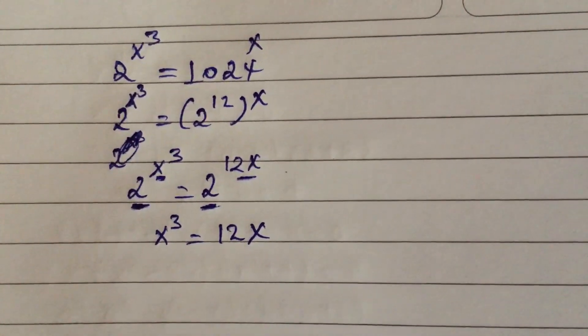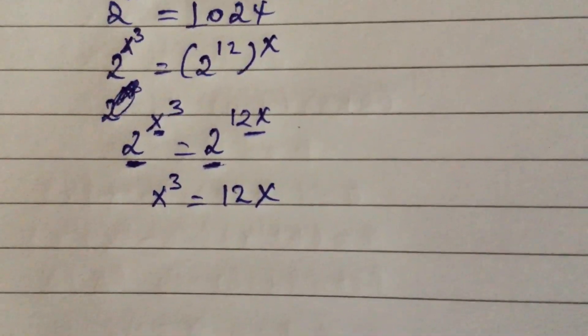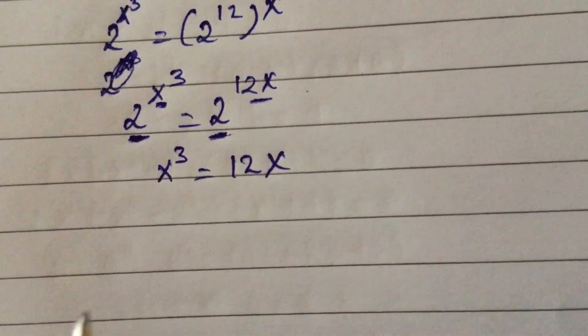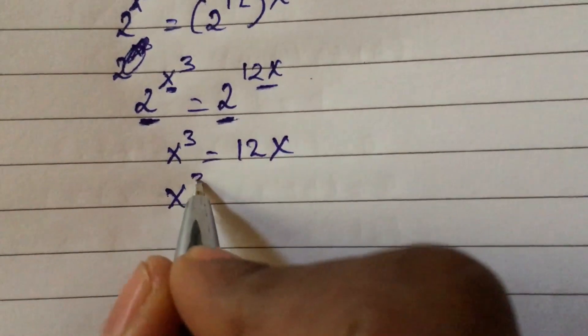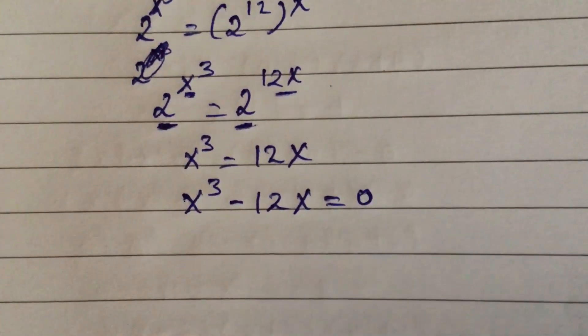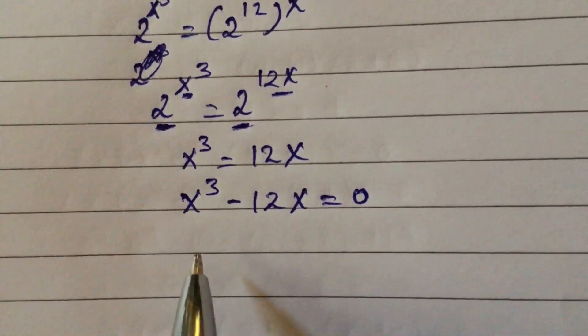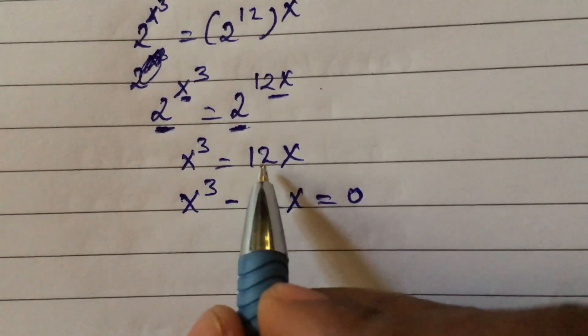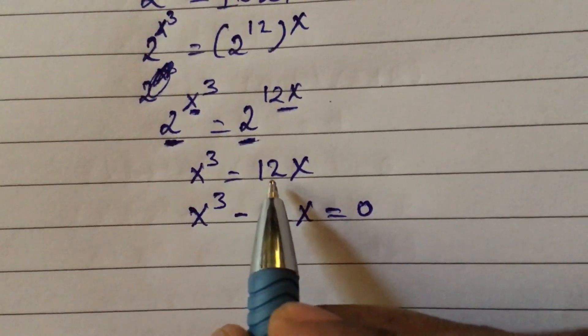Next, x cubed minus 12x equal to 0. We will take this number to the left side.